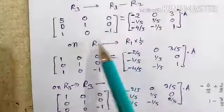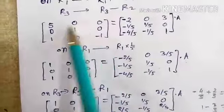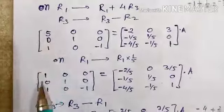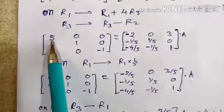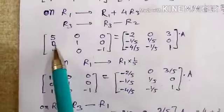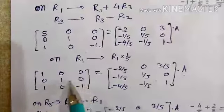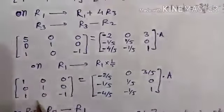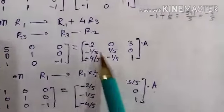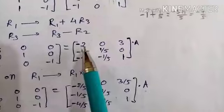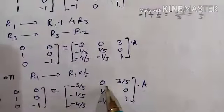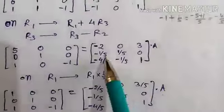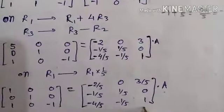Now apply R1 multiplied by 1 upon 5 — that is, divide by 5 — so you get 1 in the leading position, giving [1, 0, 0] in the left part. Second row stays as [0, 1, 0] and third row stays as [1, 0, minus 1]. On the identity side, first row divided by 5 gives minus 2 upon 5, 0 upon 5 is 0, and 3 upon 5. Second and third rows remain as they are.